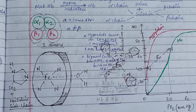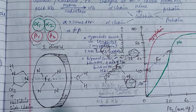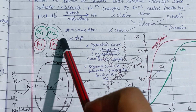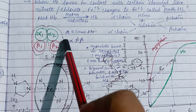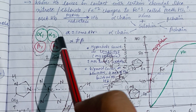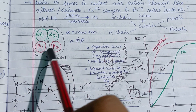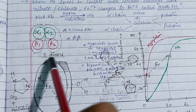In the dimer structure, alpha-1 and alpha-2 are attached with salt linkage, while beta-1 and beta-2 do not touch each other.